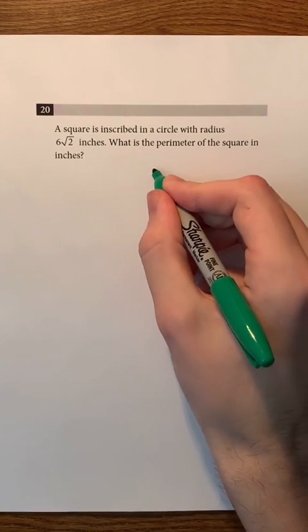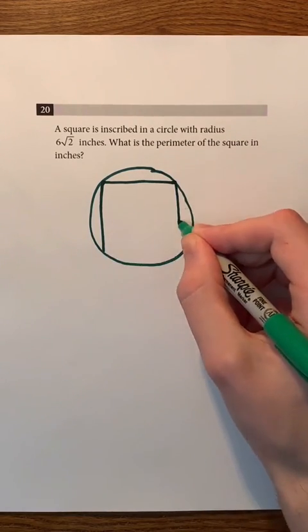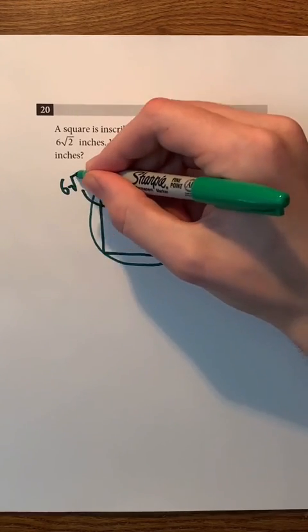Let me draw what's going on so you understand the question better. So, we have this circle and then the square inscribed in it. We also know that the radius of the circle is 6 times the square root of 2 inches.